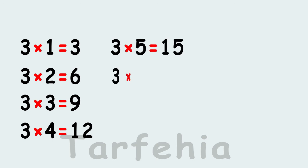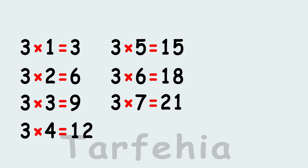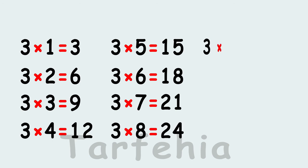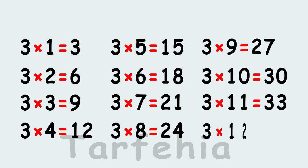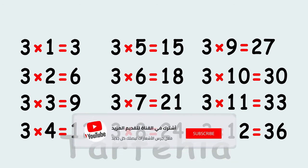Three times six equals eighteen. Three times seven equals twenty-one. Three times eight equals twenty-four. Three times nine equals twenty-seven. Three times ten equals thirty. Three times eleven equals thirty-three. Three times twelve equals thirty-six.